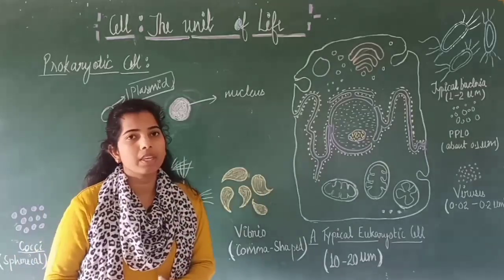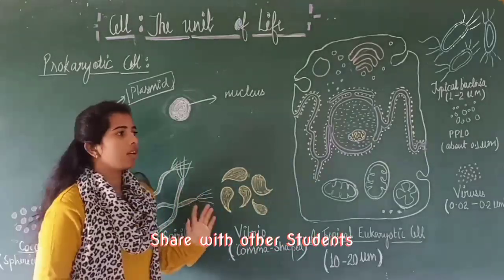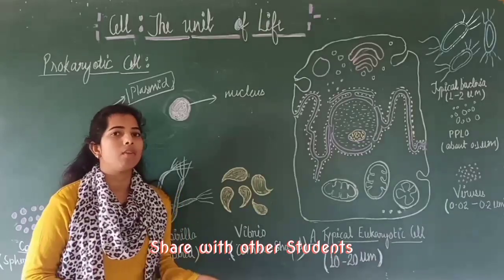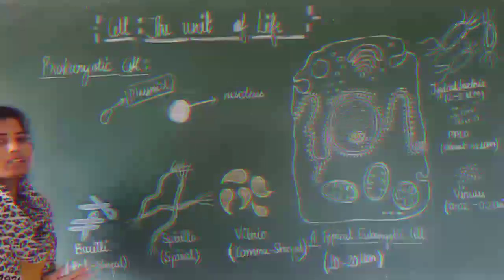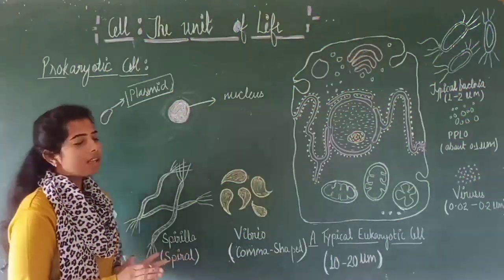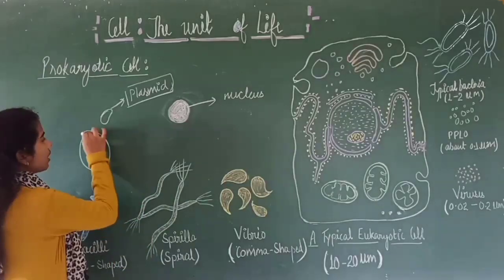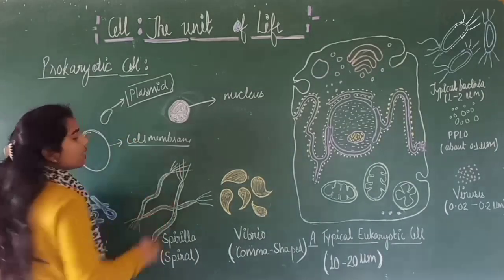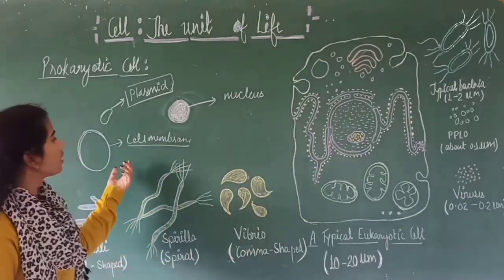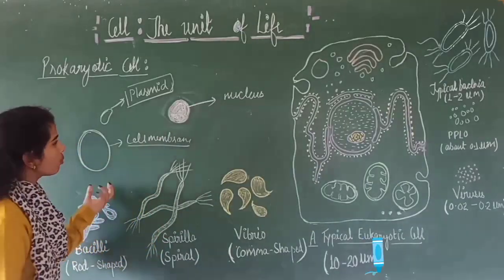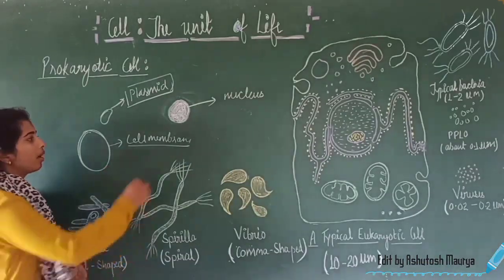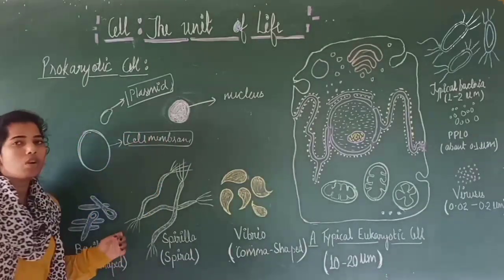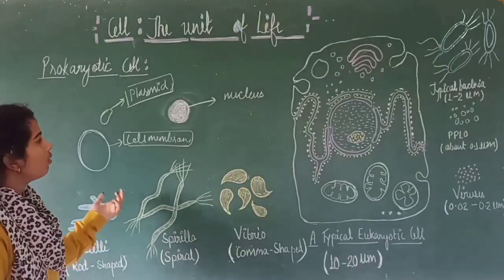All cells are covered by the cell membrane except mycoplasma. Mycoplasma are the smallest prokaryotic organisms which do not have a cell membrane. Except mycoplasma, all prokaryotes have a cell membrane.